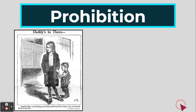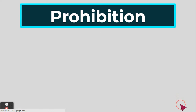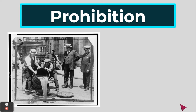So the United States created the 18th Amendment, which banned and prohibited the sale or making of intoxicating liquors or alcohol. During prohibition, government officials would go out and dump alcohol into the sewers and into the streets to stop people from having access to it.